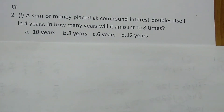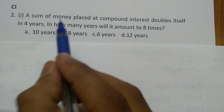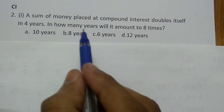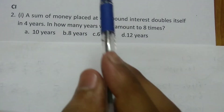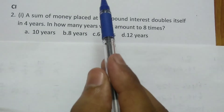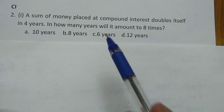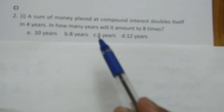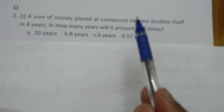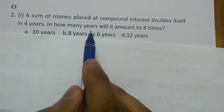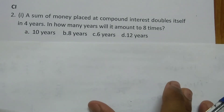The next question is a similar model but with a key difference: the previous questions were based on simple interest, while this model involves compound interest.